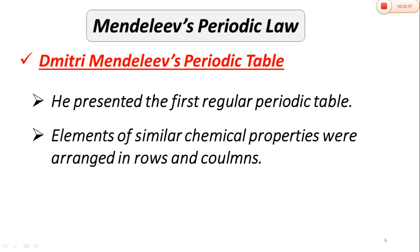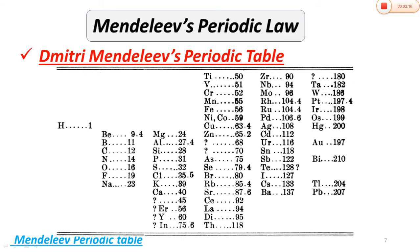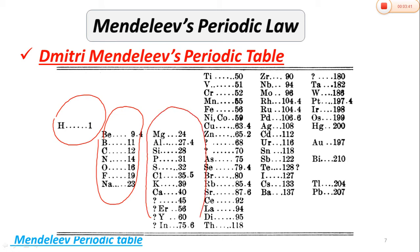Elements of similar chemical properties were arranged in rows and columns. All the elements that have similar properties are placed in one group.